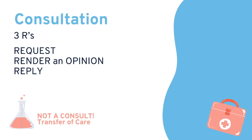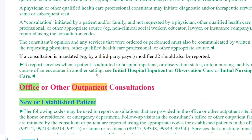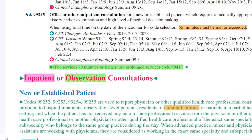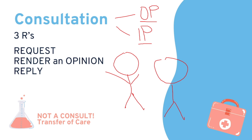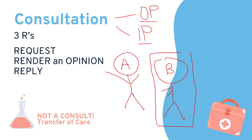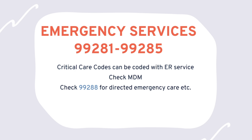The next type of service is consultation codes. A consultation is an E&M service provided at the request of another physician or qualified healthcare provider. Don't confuse this with an office visit. There are two types of consultation code sets depending on the type of service. For consultations, remember the three R's: request, render an opinion, and reply. For example, if Doctor A asks Doctor B for an opinion on a patient's condition, you can code a consultation for Doctor B. However, it does not qualify as a consultation if there is a transfer of care or ownership of care from the other provider.